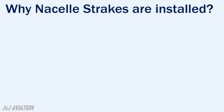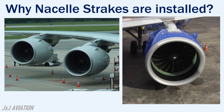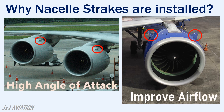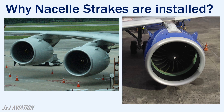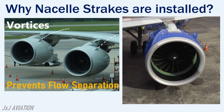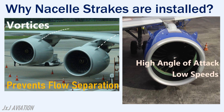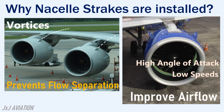Now let's see why nacelle strakes are installed. On the engine, strakes may be installed on both sides of the engine or only on the inboard side, as seen on some large commercial aircraft. These are used to improve the airflow over the wing especially at high angles of attack and at low speeds. At these nacelle strakes, small vortices are created which increase the energy of the airflow and prevent flow separation over the wing. So nacelle strakes are important at low speeds and high angles of attack since they improve the airflow across the wing and increase the effectiveness of the wing.